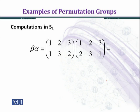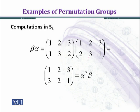We now compute beta times alpha. Tracing through: 1→2 (via beta) then 2→3 (via alpha), giving 1→3; and 2→3→1, 3→2→... working through all values we get 1→3, 2→2 (correction: 1→2 via composition), ultimately yielding the result beta·alpha.